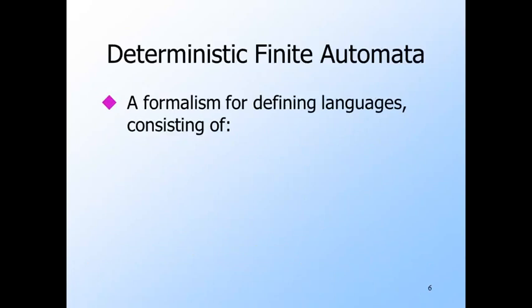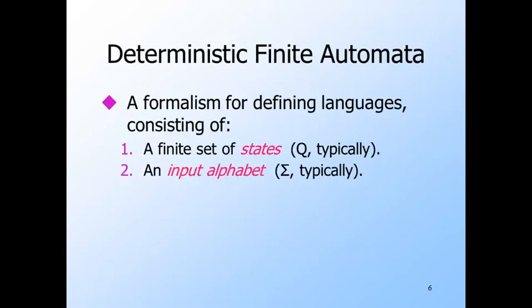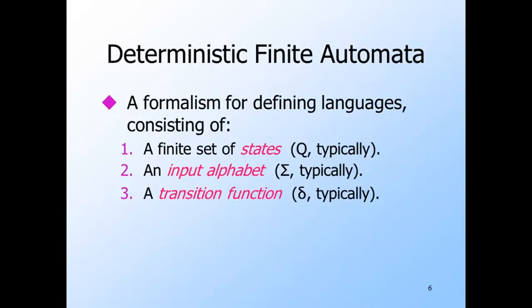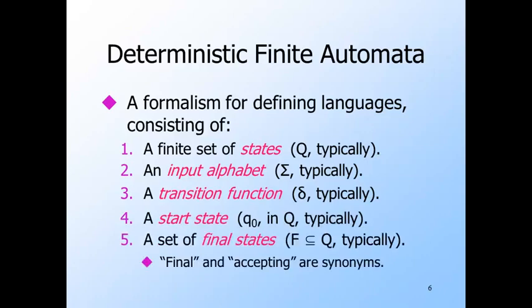Now we'll give the formal notation for deterministic finite automata. There is a finite set of states Q, a finite input alphabet sigma (the traditional symbol), a transition function (the guts of the automaton, telling us how it moves from state to state in response to inputs, traditionally denoted delta), one start state designated q-sub-zero, and some states designated as final or accepting states, typically denoted F. The transition function delta takes two arguments — a state q and an input symbol a — and gives back the state the automaton goes to when in state q and the next input symbol is a. The function delta is total: it has a value for every state and symbol.